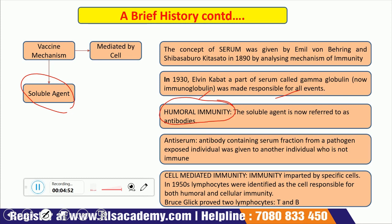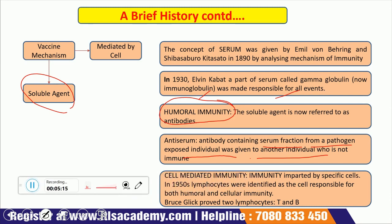Anti-serum is an antibody-containing serum fraction from a pathogen-exposed individual given to another individual who is not immune. The process by which an individual not immune to a particular disease is injected with antibodies from another individual is known as passive immunity, because the antibodies are not generated by that person but received from someone else's immune system. Since these antibodies are not generated in the host body, they are very short-lived.